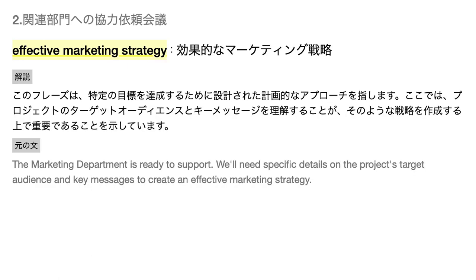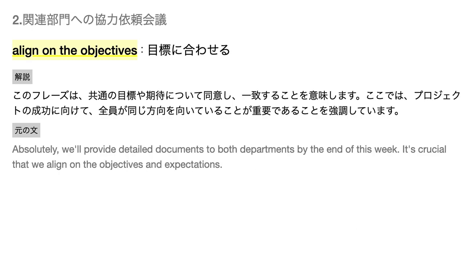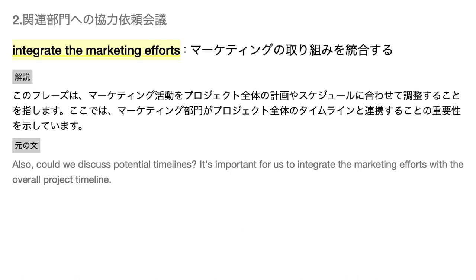Effective marketing strategy — このフレーズは、特定の目標を達成するために設計された計画的なアプローチを指します。Digital infrastructure — デジタルインフラ。Align on the objectives — このフレーズは、共通の目標や期待について同意し、一致することを意味します。ここでは、プロジェクトの成功に向けて、全員が同じ方向を向いていることが重要であることを強調しています。このフレーズは、マーケティング活動をプロジェクト全体の計画やスケジュールに合わせて調整することを指します。